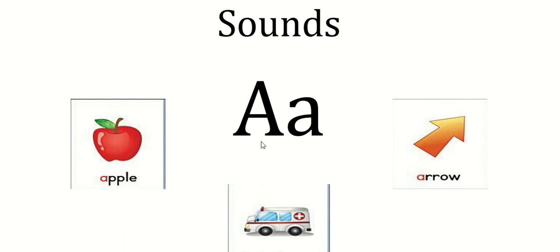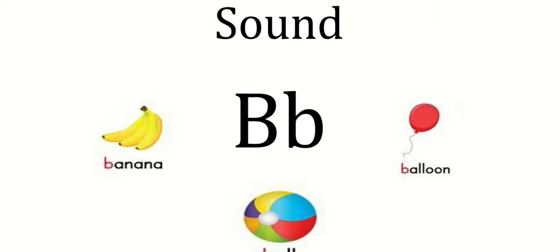The next sound is Ba. Ba — ball, Ba — balloon, and Ba — banana. We have to learn the sound and also the alphabet B. This is B, and the Ba words are: banana, ball, balloon.